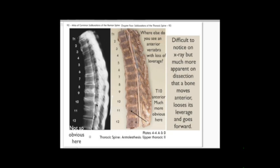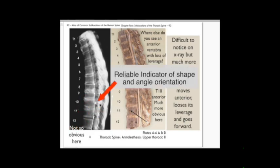When you start to plot these things on a graph, this is a sudden acceleration, a sudden increase in the curve, even though it looks like T10 might actually be an extension on the x-ray. But if you look at the back of the vertebrae, which is the reliable indicator of its shape, you can see that actually goes forward into flexion.